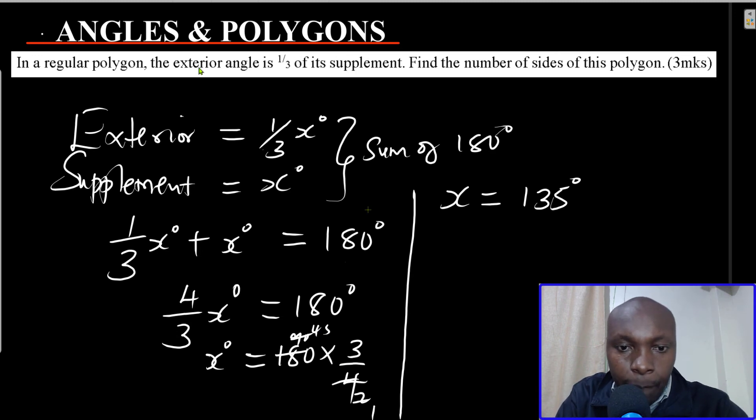Now we have x degrees to be 135. So that means that the supplement is therefore 135 degrees. Then the exterior will be a third of that, a third of the supplement, which is a third of 135 degrees. And this will give 45 degrees. Simple as that.